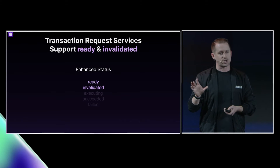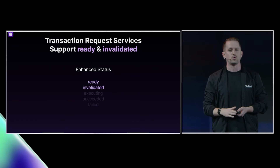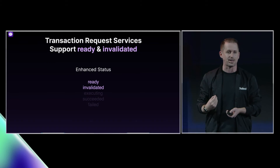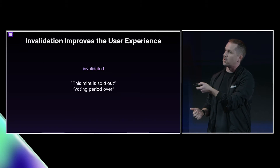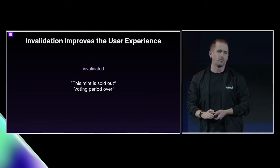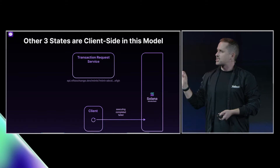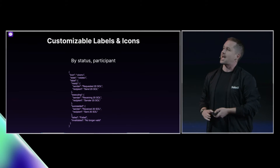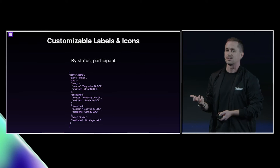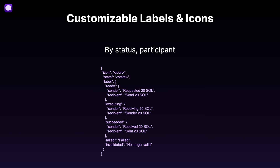Transaction request services, in a smart message context, are due validation to check whether a transaction is ready or invalidated. Ready is equivalent to there being no status in the traditional Solana Pay specification. Invalidated is useful if, for example, the mint has sold out, or the voting period is over. Executed, completing, and failed are all managed client-side. But the transaction request service has a responsibility to show the client what kinds of displays the user should see. So we extend the label and icon so that either one can be nested JSON to support the various states, as well as the sender and the receiver, because this is a messaging environment.